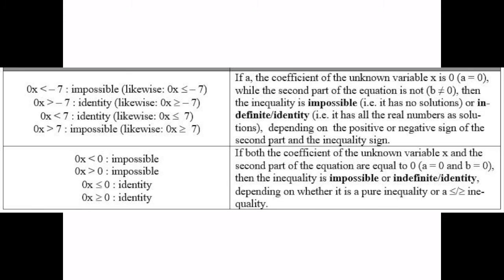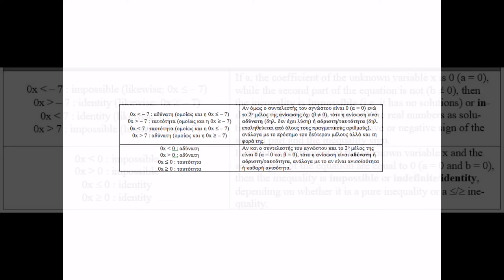But if the coefficient of the unknown x is 0 and the second part of the inequality is not, then the inequality is either impossible or indefinite identity, depending on the sign of the second part and the direction of the inequality. We check its truth, as we've learned in the previous chapter, and we decide accordingly. If it's true for every x, then it's an identity, otherwise it is impossible. If both the coefficient of the unknown x and the second part are 0, then the inequality is impossible or indefinite identity, depending on whether it is a pure inequality or not.